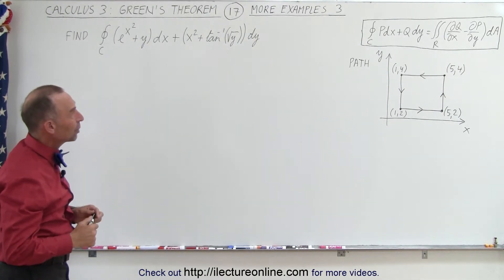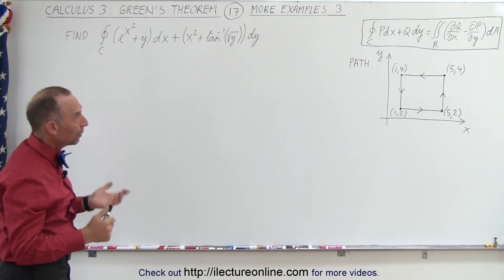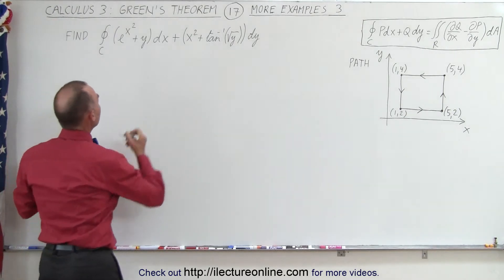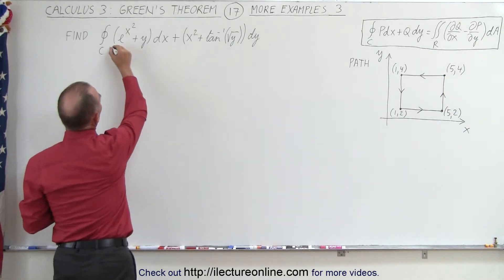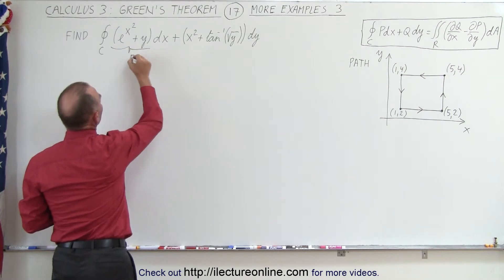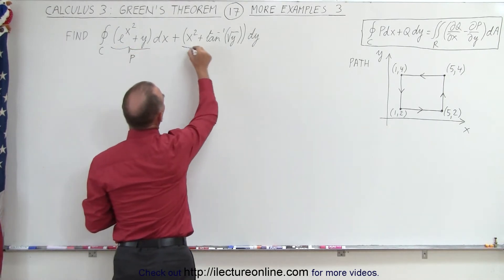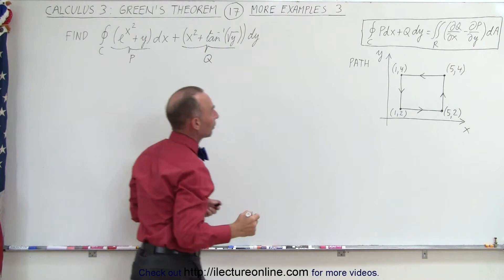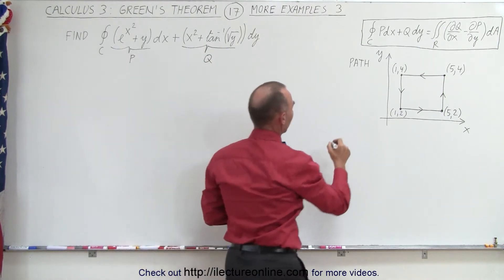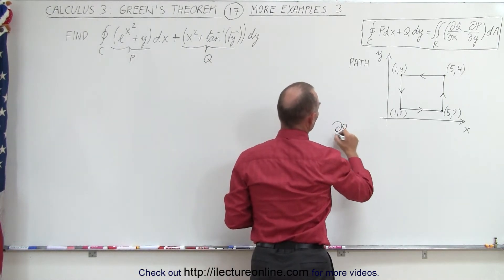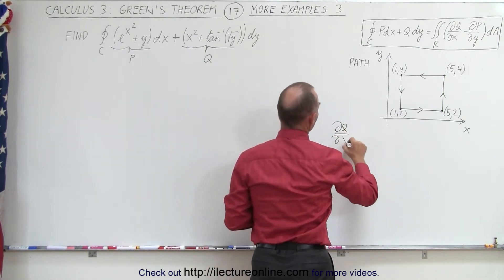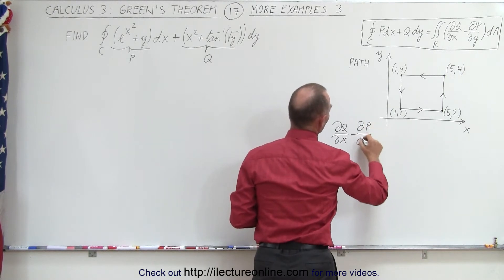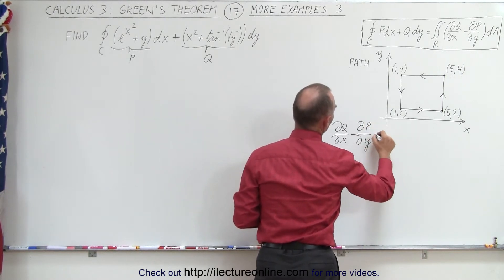Let's see what we can do applying Green's theorem. We identify P, which is this portion right here, and we identify Q, which is the portion right there. What we're going to do is find the partial of Q with respect to x and subtract from that the partial of P with respect to y.